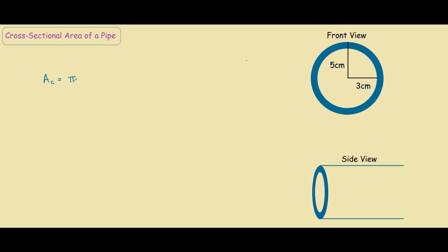So πr² and we call this 5cm radius as radius 1, and we subtract it from the smaller circle, so πr². So this 5cm is our r1 and this 3cm is our r2.